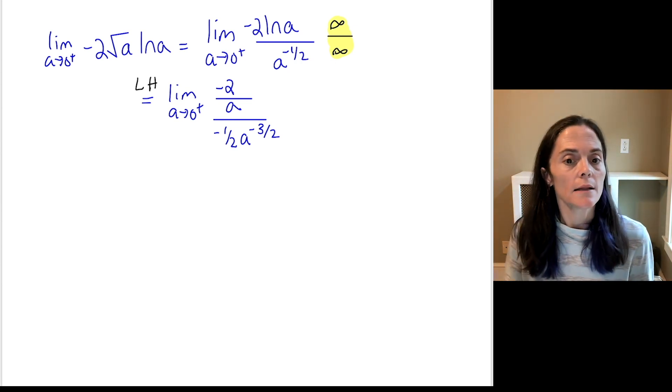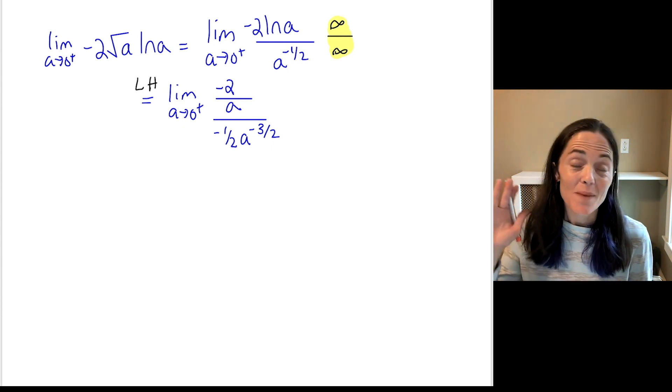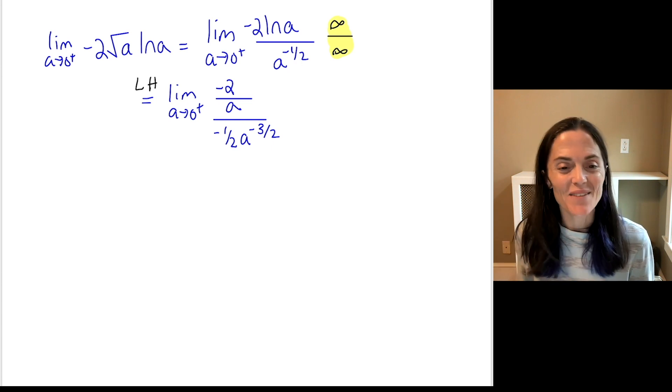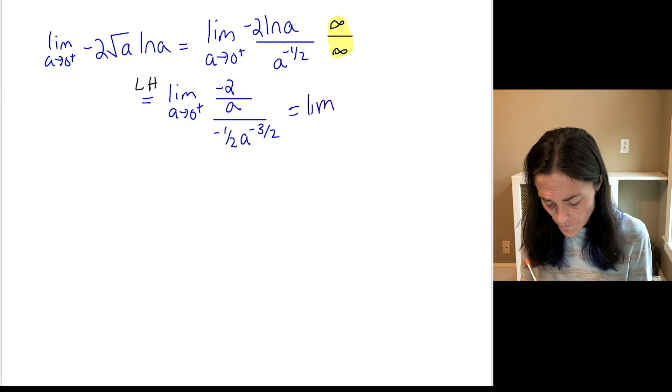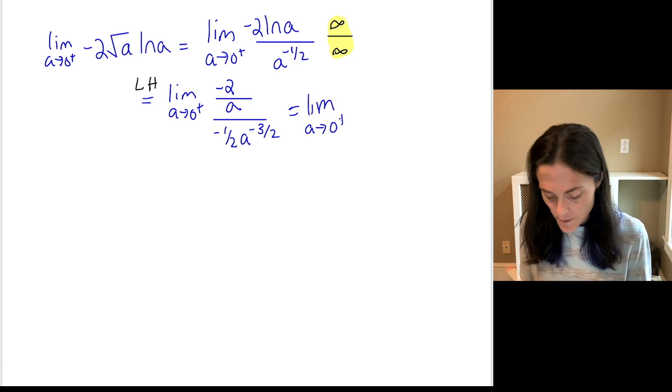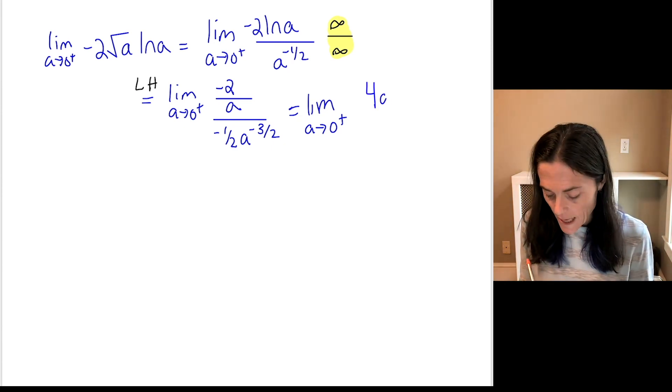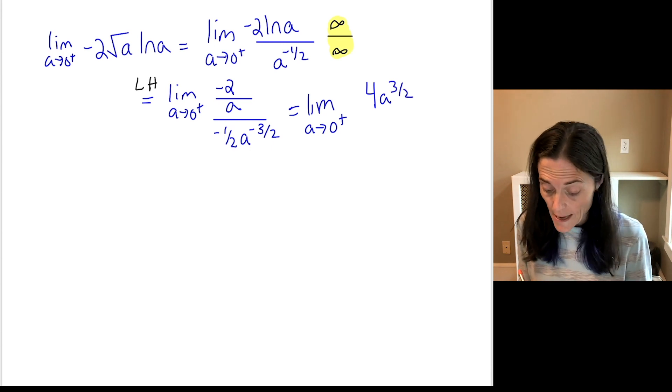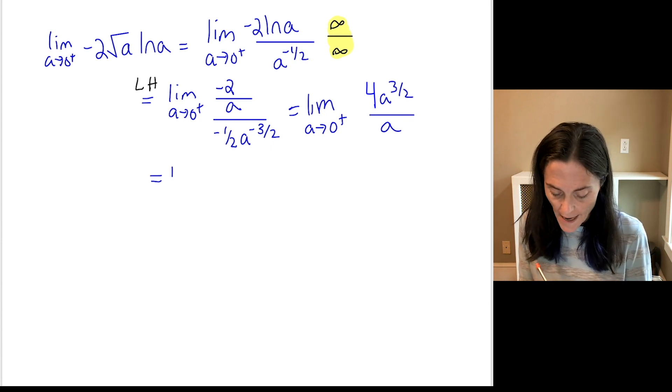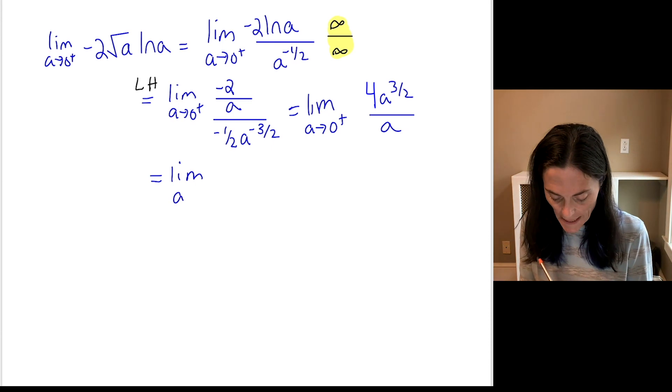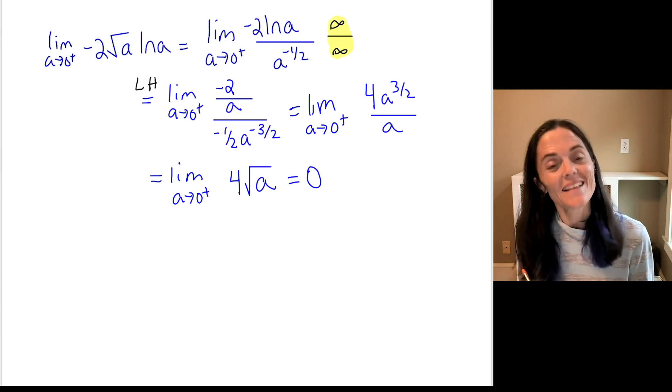Re-evaluate the limit. Well, looking at it like this, it still looks like we would get plus or minus infinity over plus or minus infinity. But we do not need L'Hopital again. We could just use properties of exponents here. So, this would be a limit as a goes to 0 on the right. Altogether, you see I have 4. I have an a to the 3 halves in the numerator and I have an a in the denominator. And one more step before I actually evaluate this limit. It's a limit as a goes to 0 on the right, 4 times the square root of a. This limit is 0.